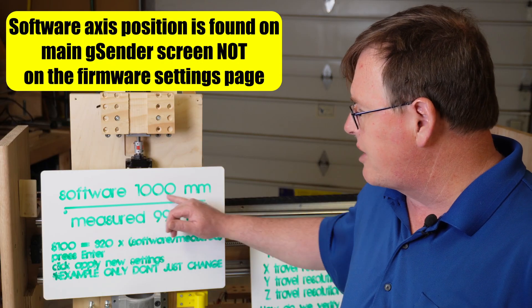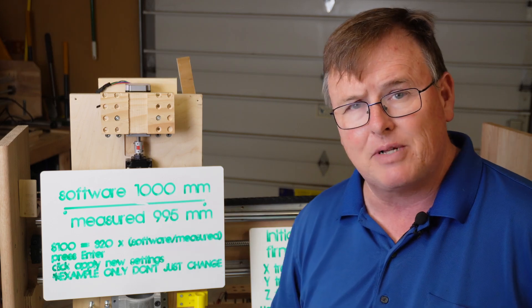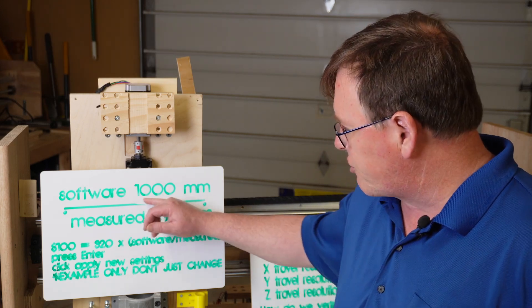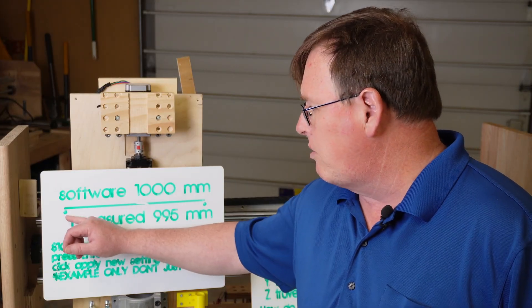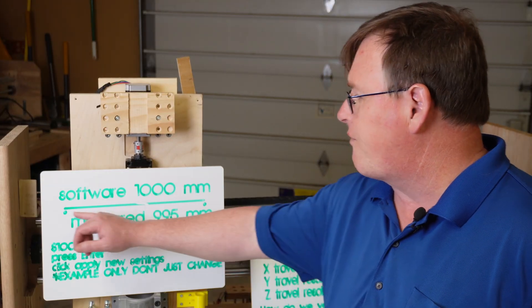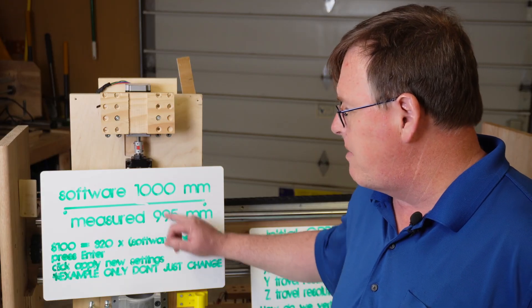And we'll measure the actual distance between the marks and compare that to the software distance. Your software then on your screen should have some value. I just chose 1000 for simplicity here. But whatever your screen has, that'll be your software value. Then you need to take a ruler or something and measure from the center of the dot to the center of the dot and see if those two values match. If they match, you're good to go.